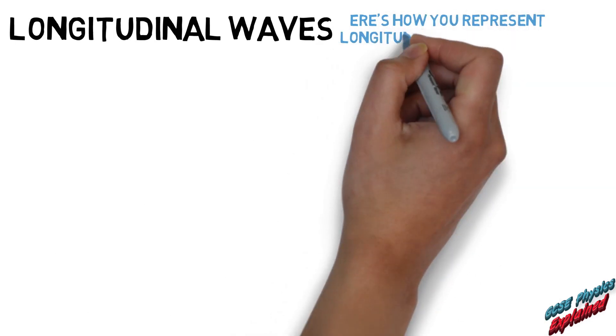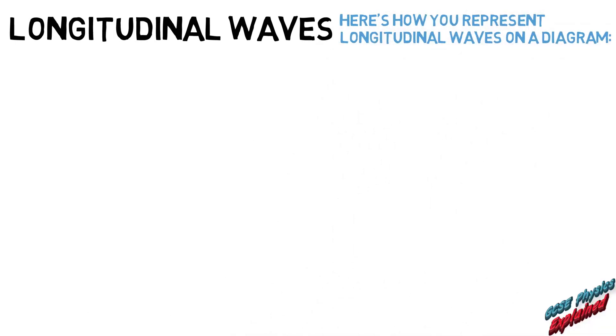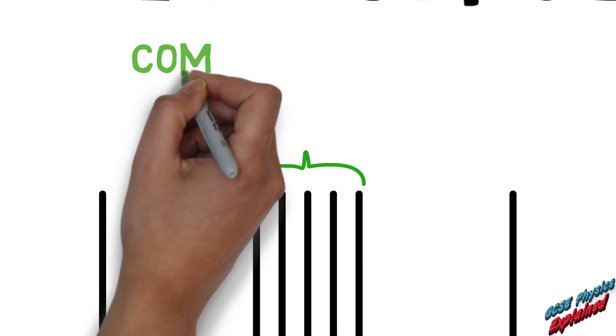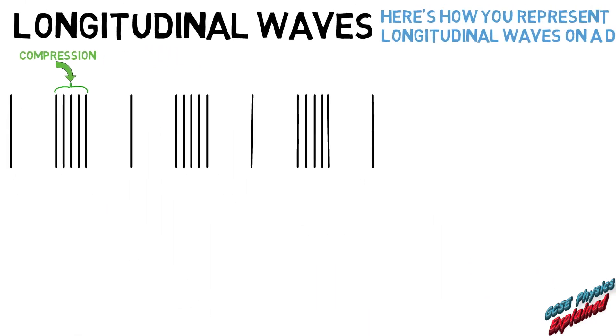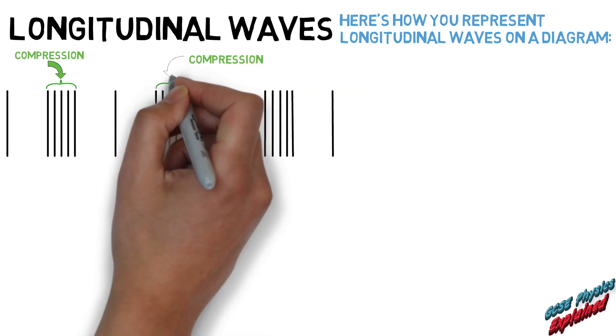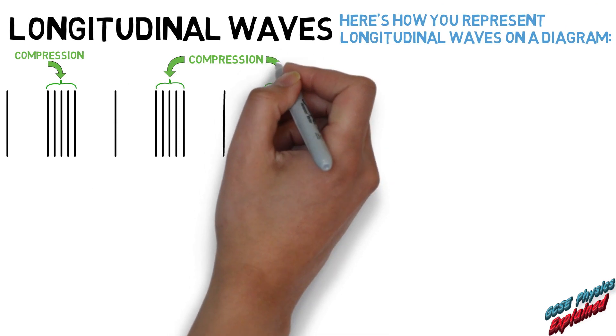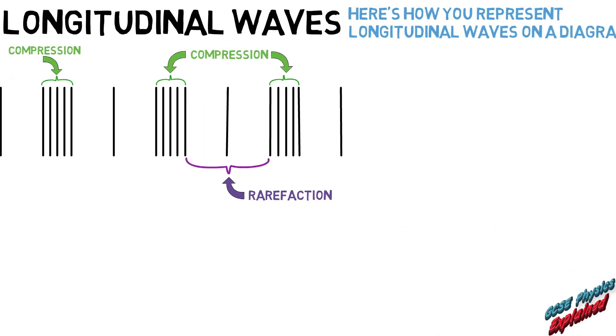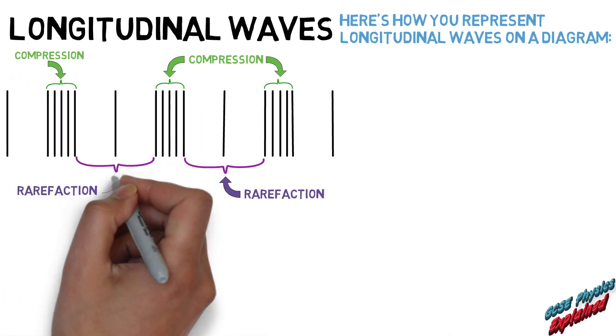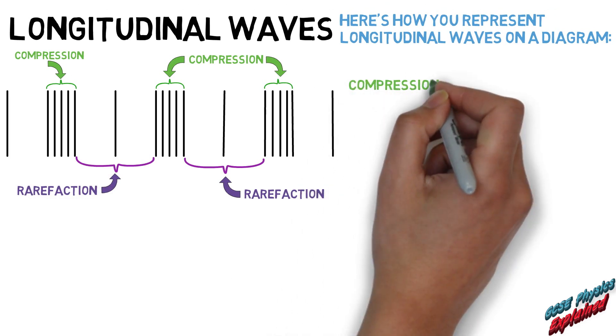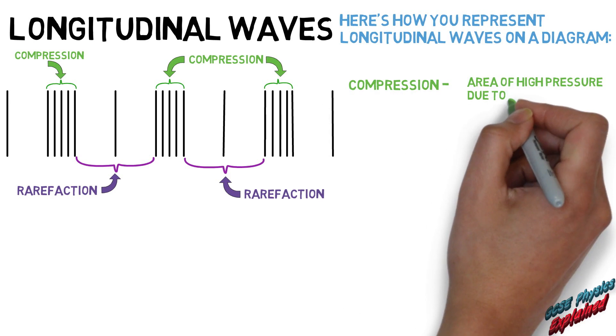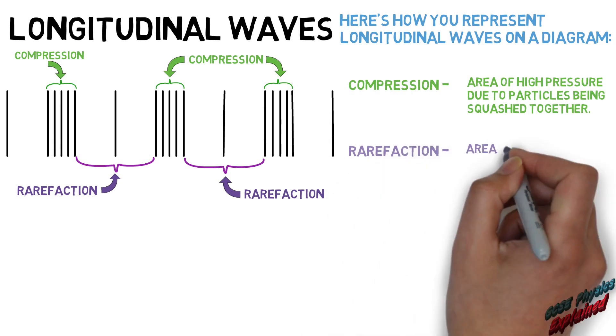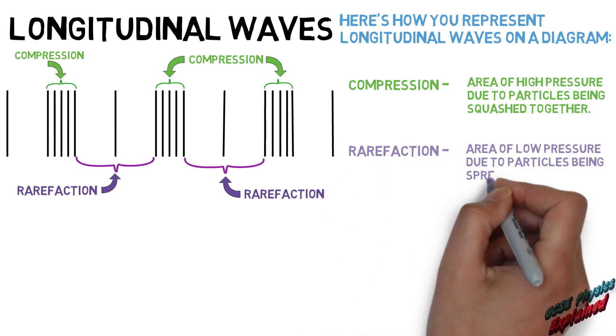Here's how you represent longitudinal waves on a diagram. Compression: an area of high pressure due to particles being squashed together. Rarefaction: an area of low pressure due to particles being spread out.